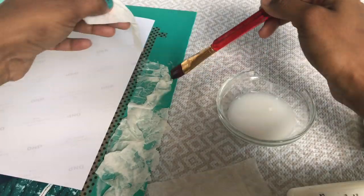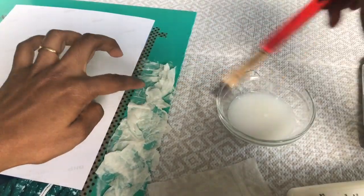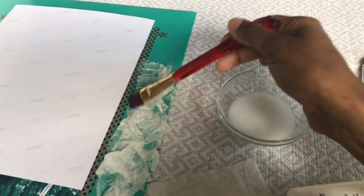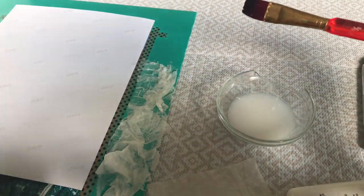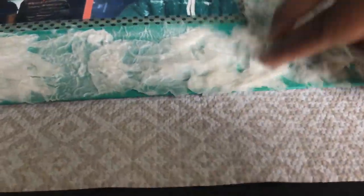You have to paste it very randomly so that it looks like the snow. Once pasted, you have to again coat it with this mixture of water and white glue.